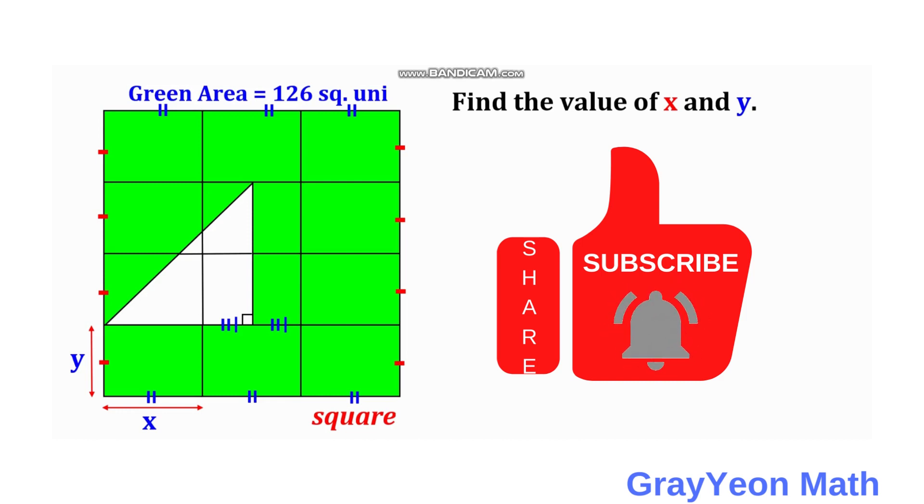Welcome to GrayeonMath. We have a square and inside the square is divided into 12 parts. The area of the green region is given to be 126 square units and it is subdivided into 3 equal parts for the horizontal and 4 equal parts for the vertical.